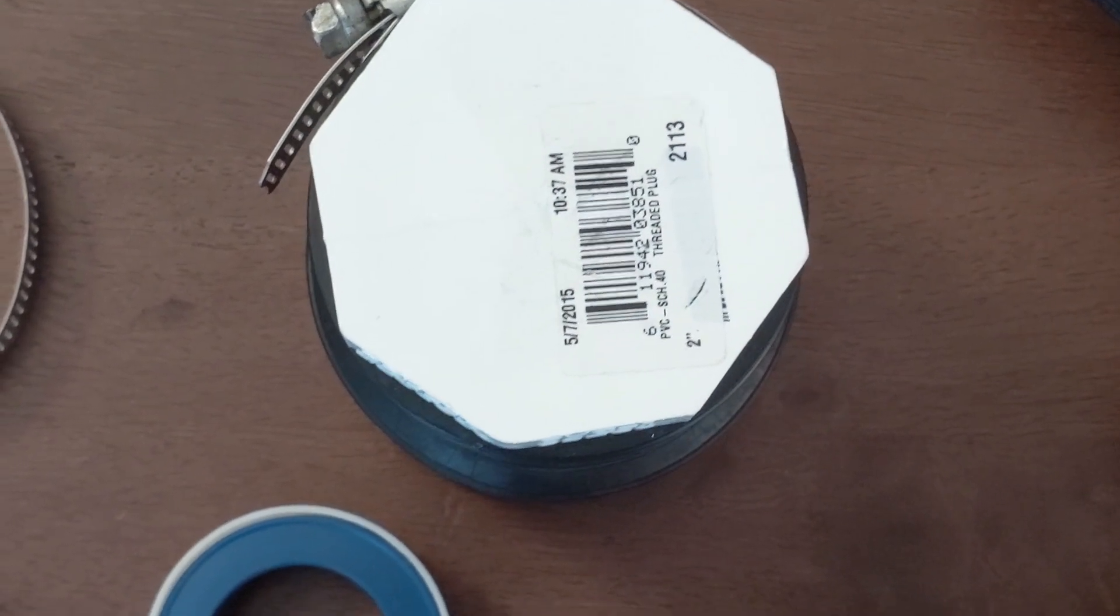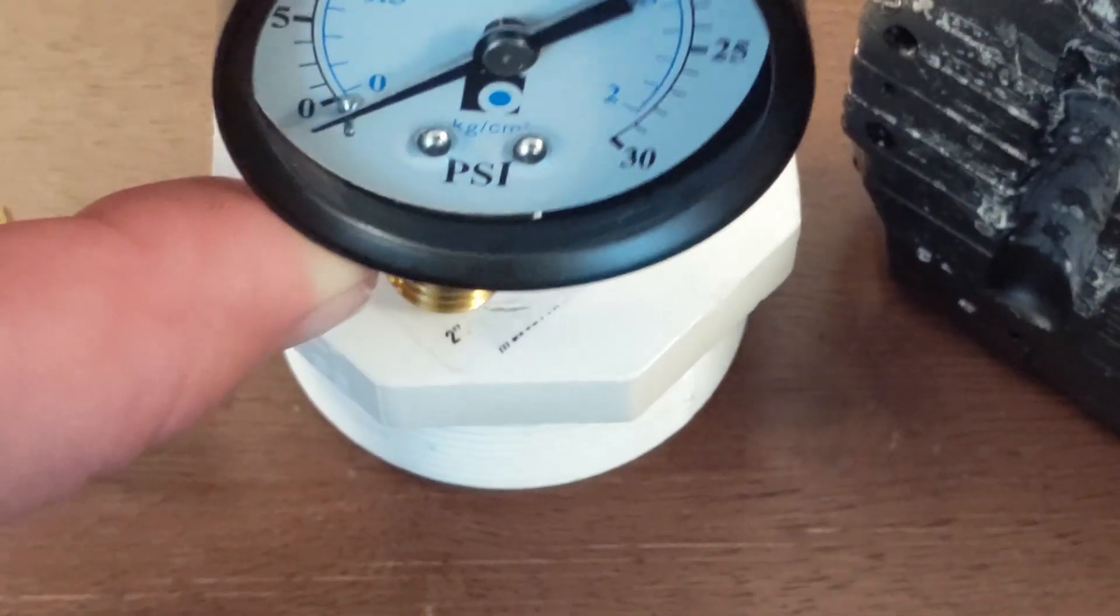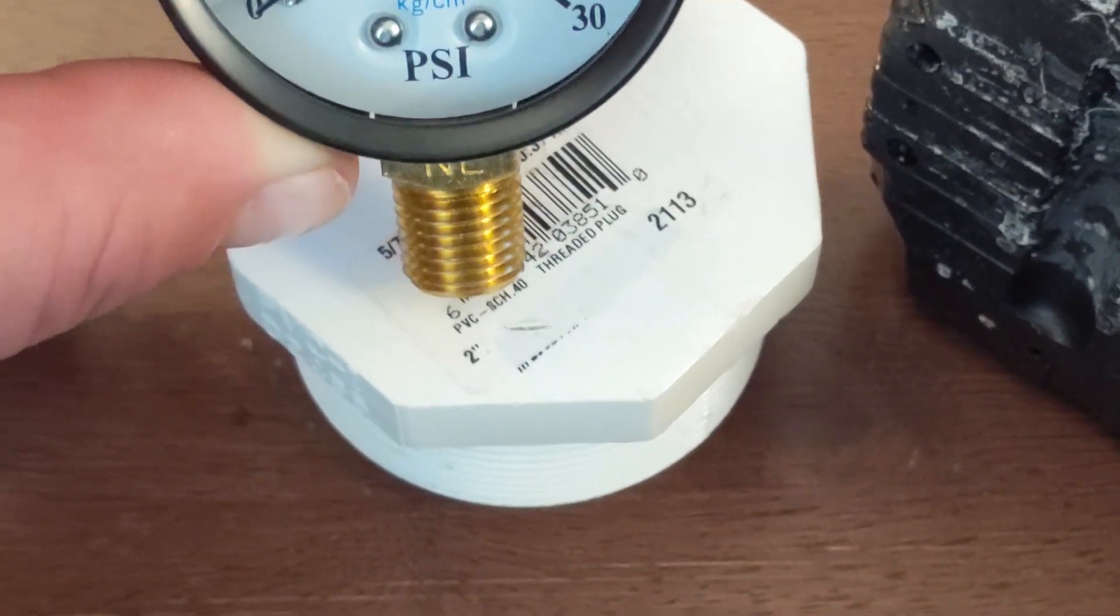I'm going to show you guys what you got to do here. First step is first, we're going to take our PVC plug and we have to figure out where we want to put our gauge so that we can read it and see if the pressure drops at all. On the opposing side we're going to stick our tire valve.